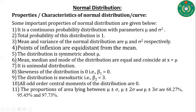Number six: mean, median, and mode of the distribution are equal to μ and coincide at x = μ. Number seven: it is a unimodal distribution. Number eight: skewness of the distribution equals 0, that is β₁ = 0. We know that the odd-order central moments are 0, that is μ₁ = 0 and μ₃ = 0, so β₁ = 0. Number nine: the distribution is mesokurtic, that is β₂ = 3.